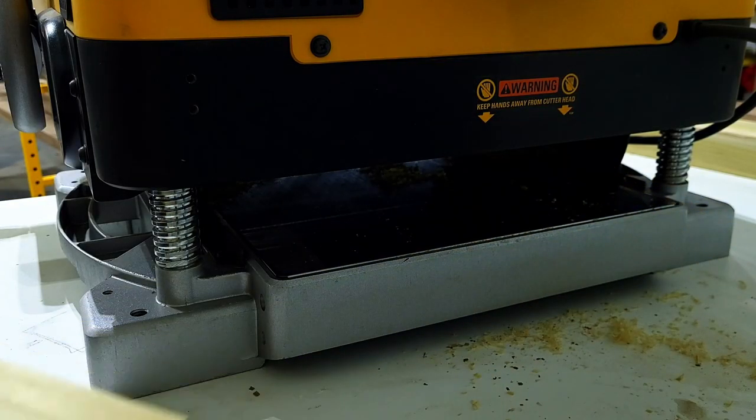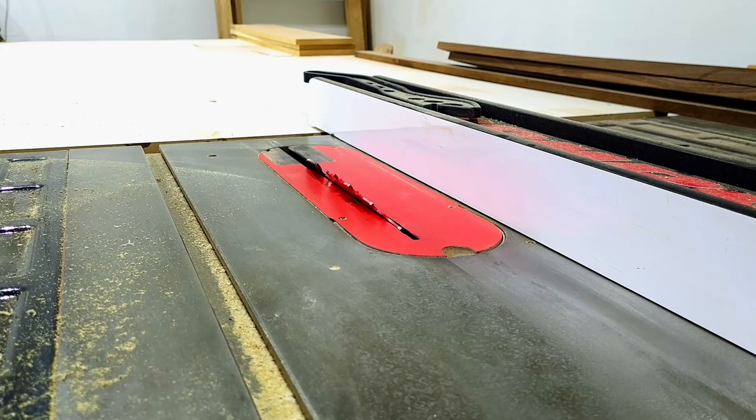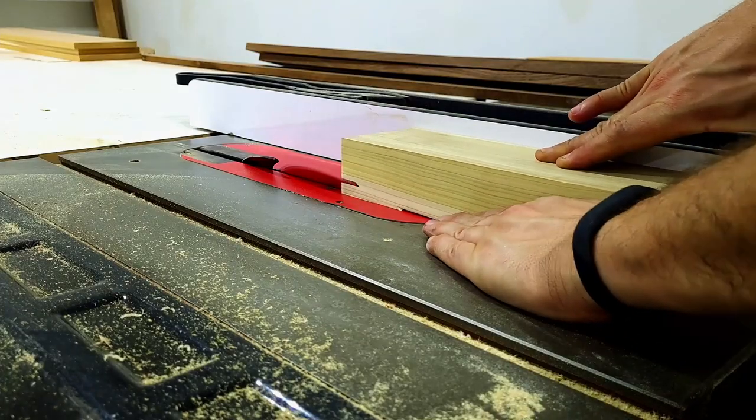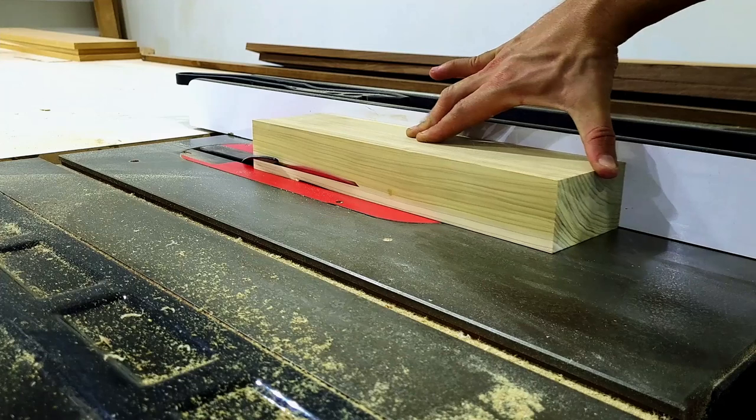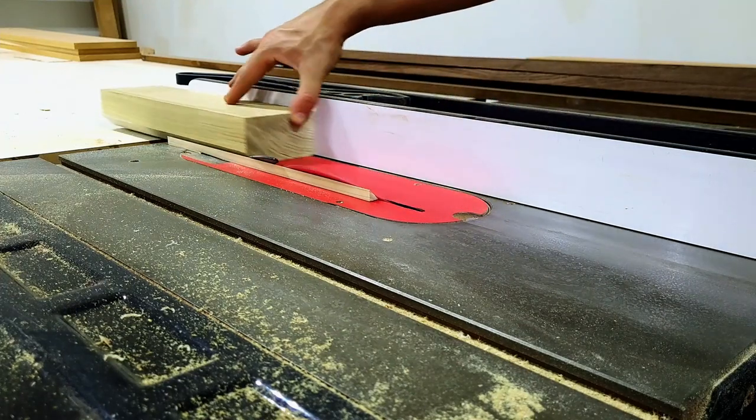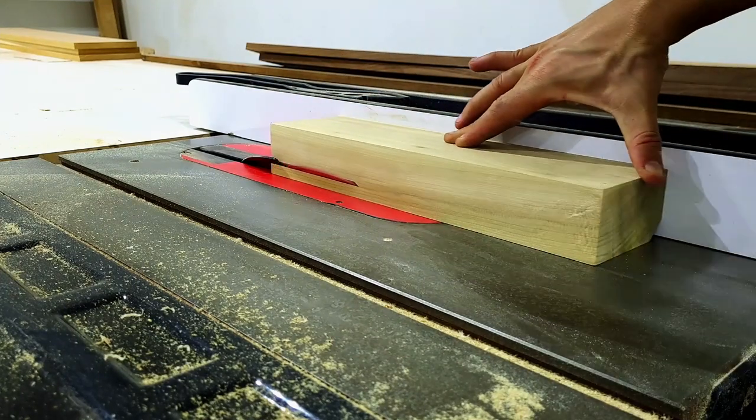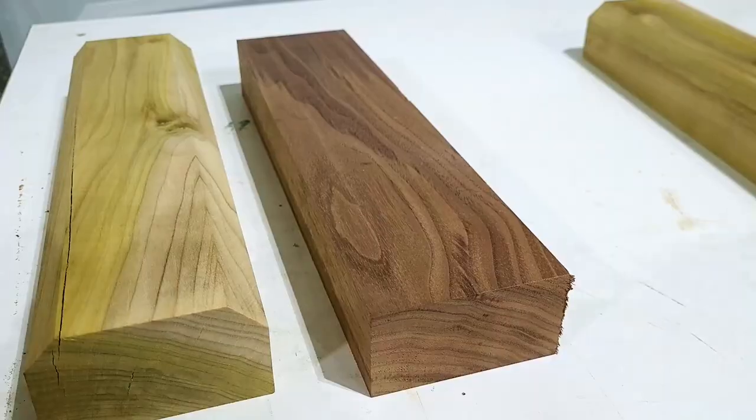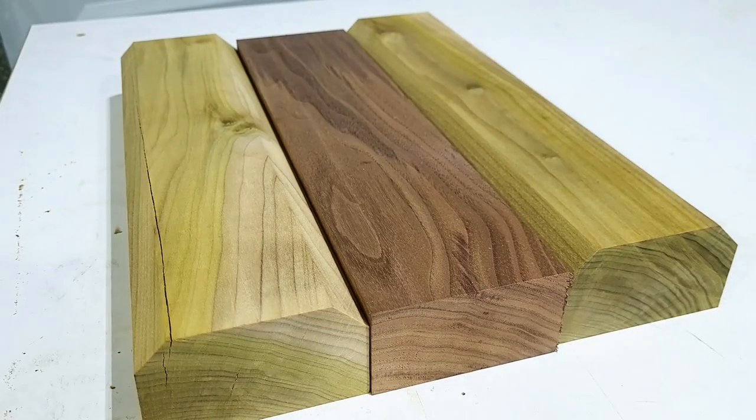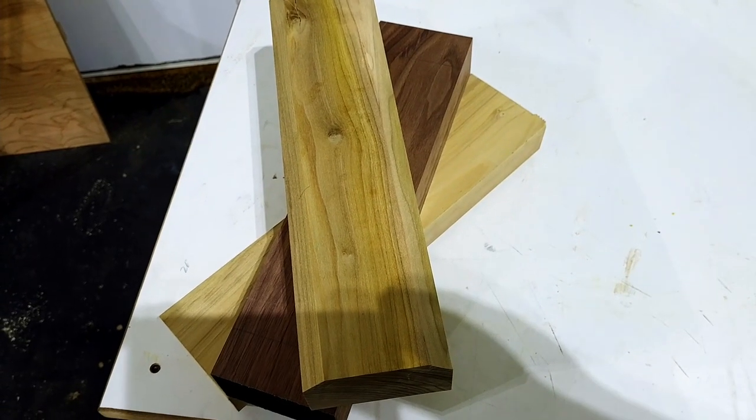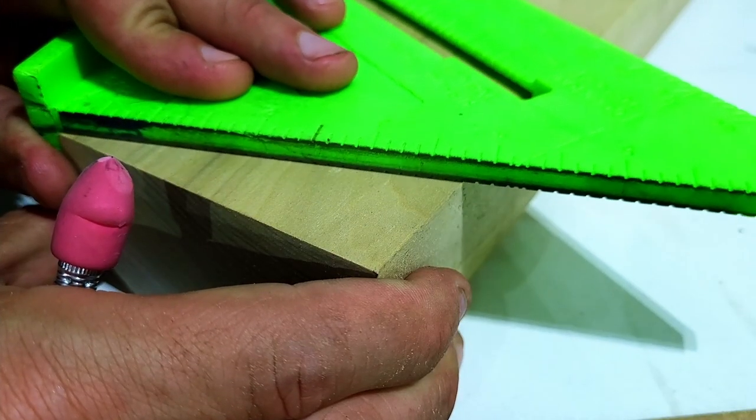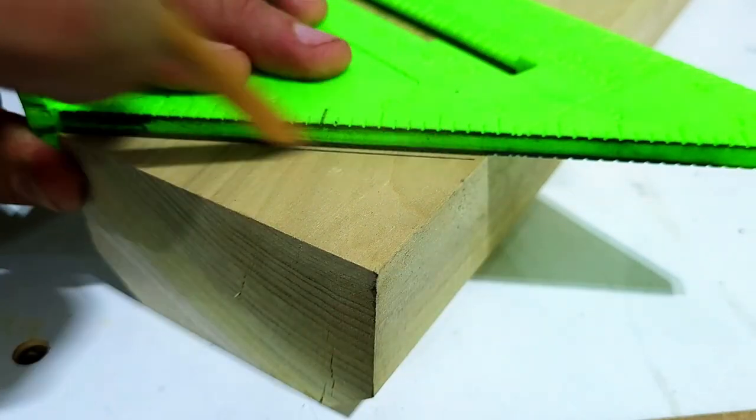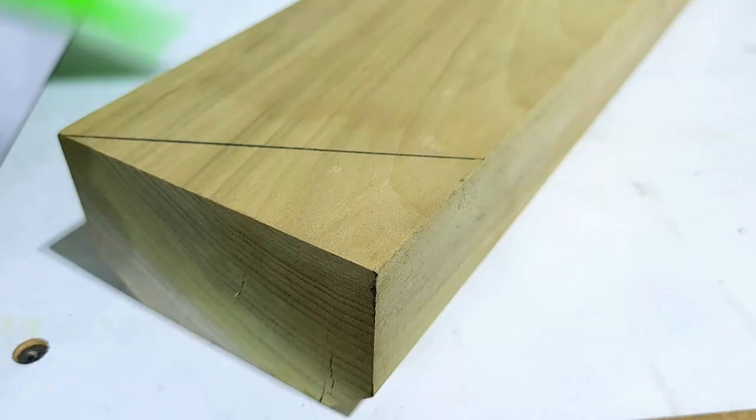To give the legs a little bit more style, I set the table saw to 45 degrees and cut a bevel on the outside face of each leg. I mocked up how I wanted the legs to stack together, marked the angles with my speed square, then took them over to the miter saw to cut them to the proper angle.